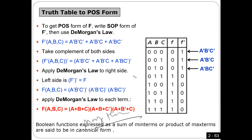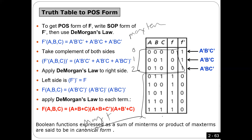In the case of product of sum, you have to work on the zeros, not the ones. Every zero here is going to make one term. We call them max terms. Max terms are the rows where we have zeros — row number 0, row number 1, row number 2. Min terms are from row 3 until row 7. To define a function, it is enough to give you the max terms or the min terms.